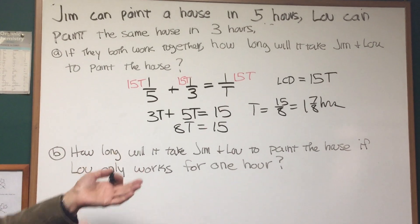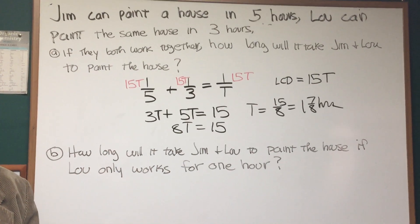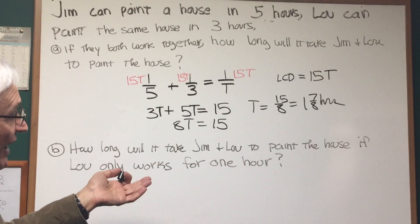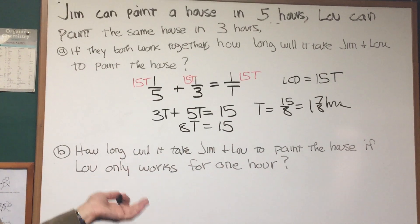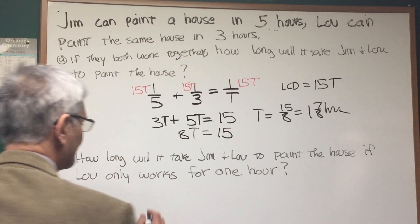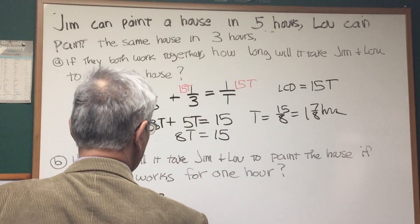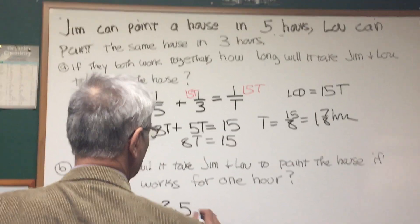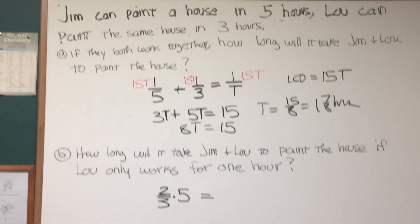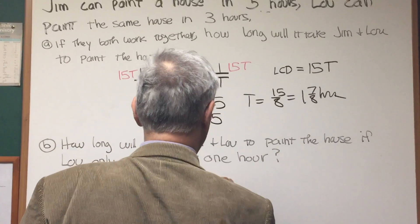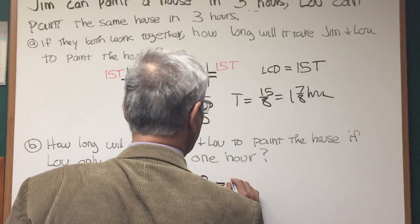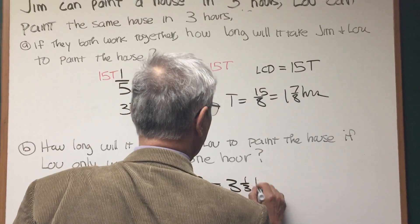That means he leaves to Jim 2 thirds of the house to paint. So if Jim can paint the entire house in 5 hours, he only has 2 thirds of the work to do. So the answer is simply going to be 2 thirds of 5 hours. Simple as that. And so the answer is going to be 10 thirds or 3 and 1 third hours.